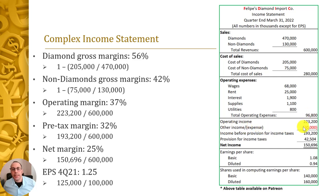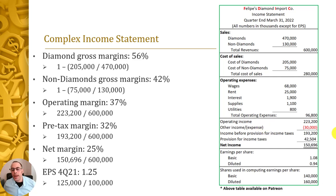Other income and expenses: sometimes companies make money or lose money outside of their core business. The $30 million here is a goodwill impairment — Felipe acquired a company a few years ago, posted goodwill on the balance sheet, and is now writing down $30 million in this accounting period, passing a loss through the income statement. Income before tax is therefore $193 million.